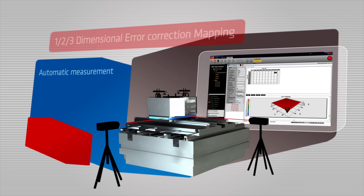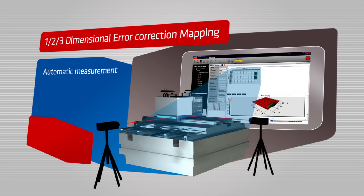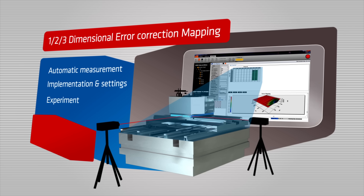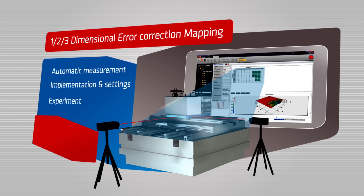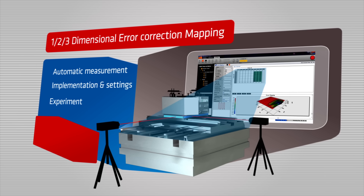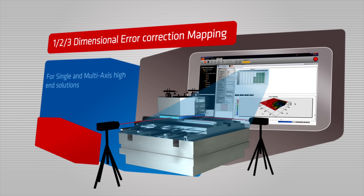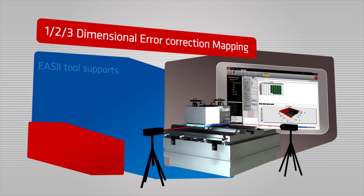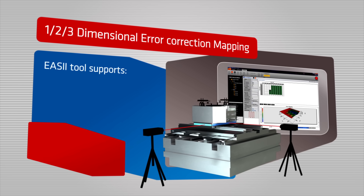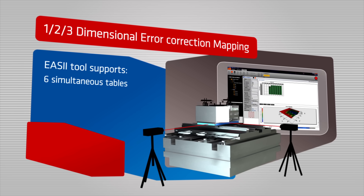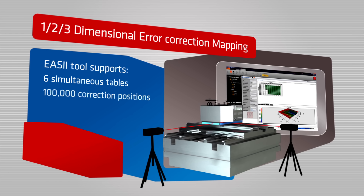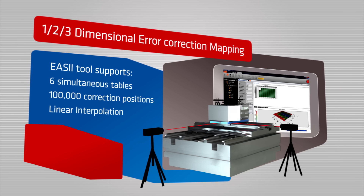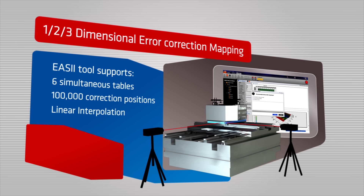The EASE-2 dedicated error correction tool offers automatic measurement, implementation, settings and experiments for 1D, 2D and 3-dimensional error correction tables for single and multi-axis sophisticated solutions. The EASE-2 error correction tool supports up to six simultaneous two-dimensional tables and up to 100,000 tabulated, linearly interpolated between correction positions.